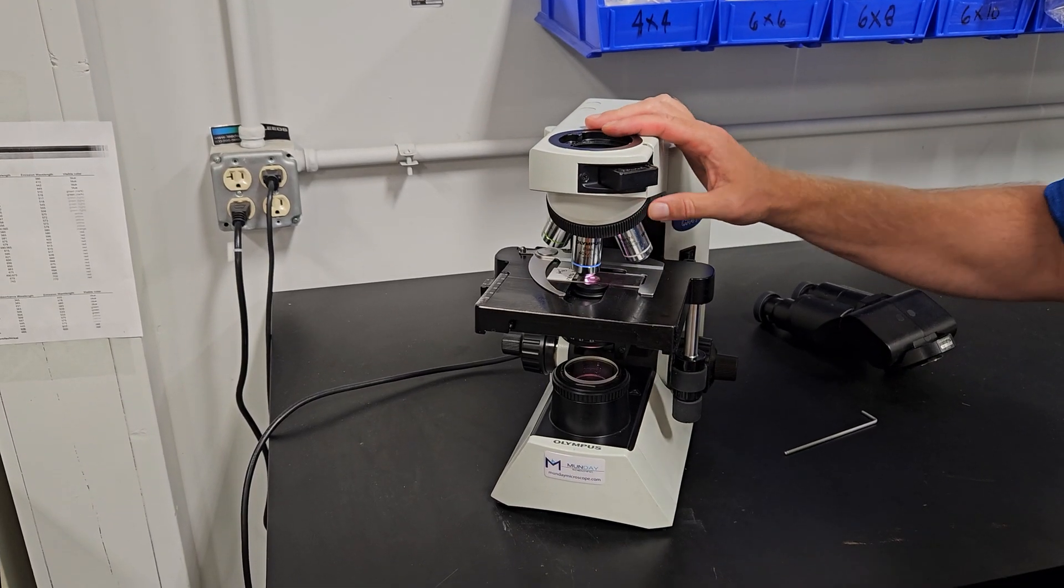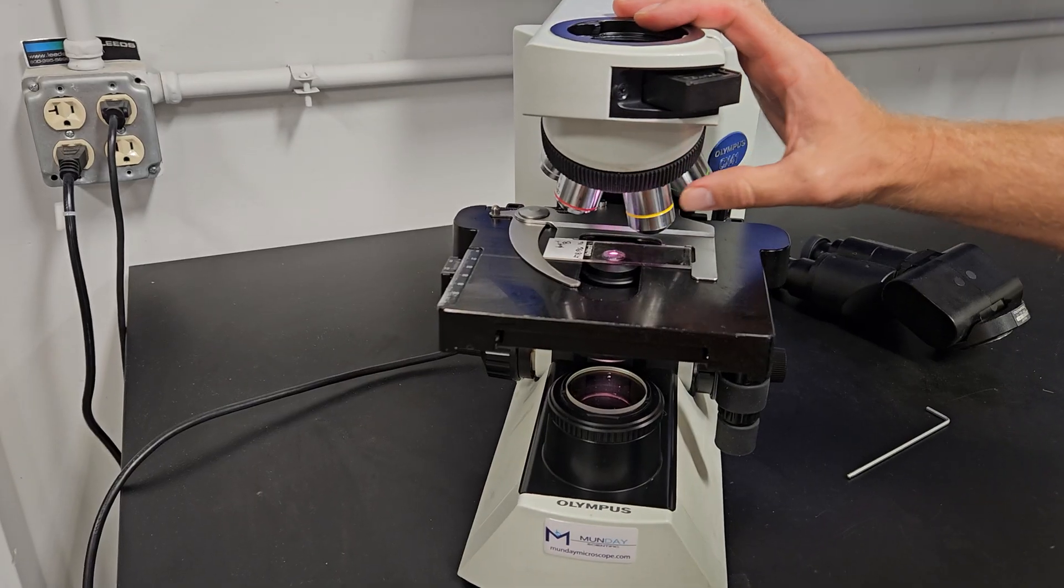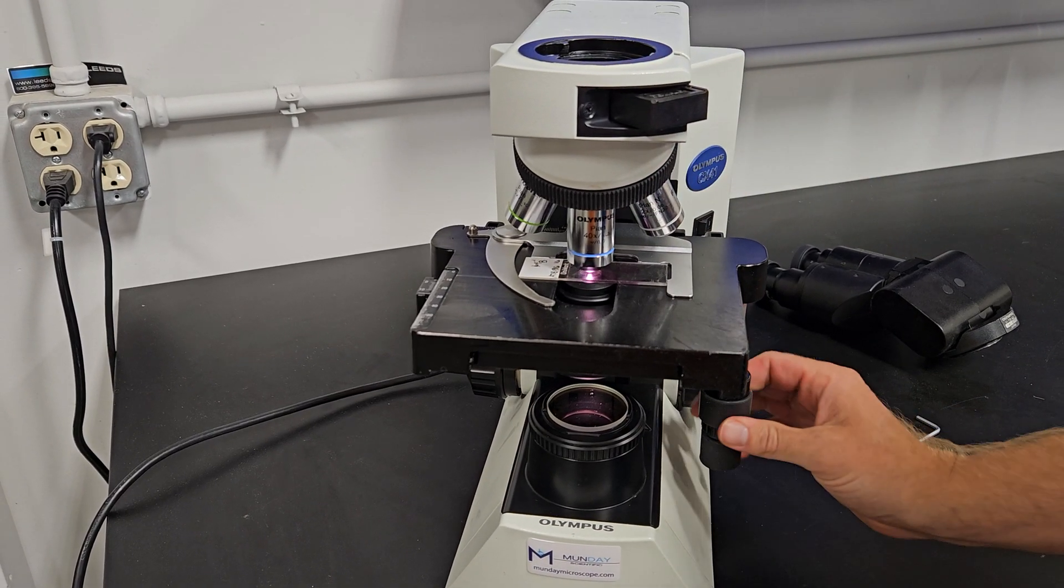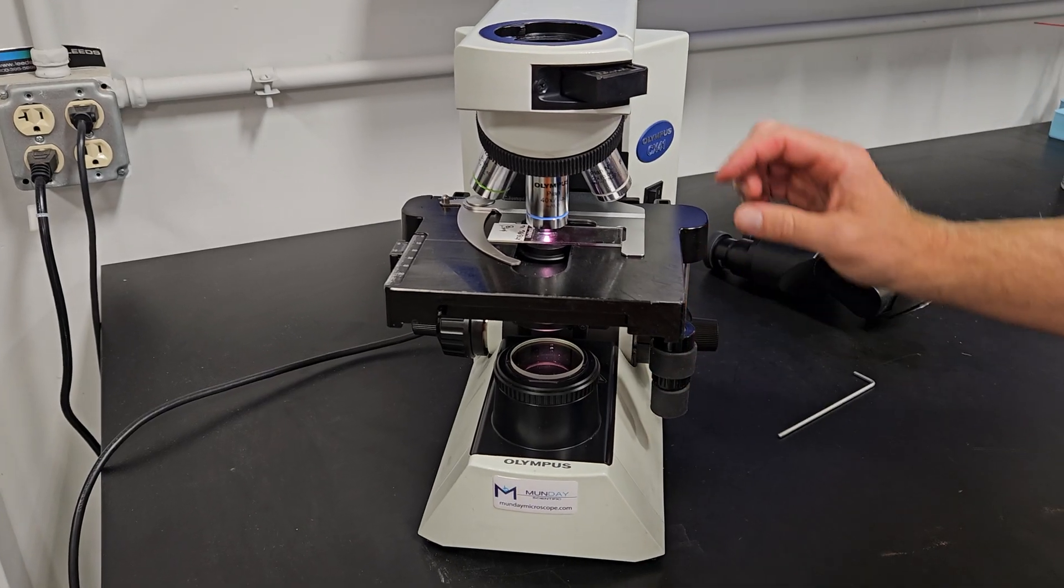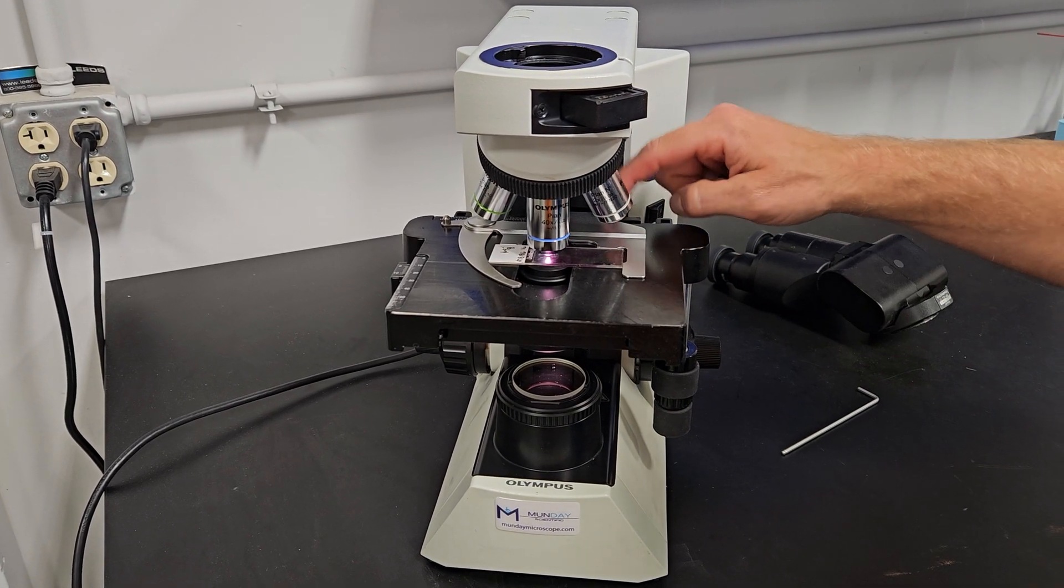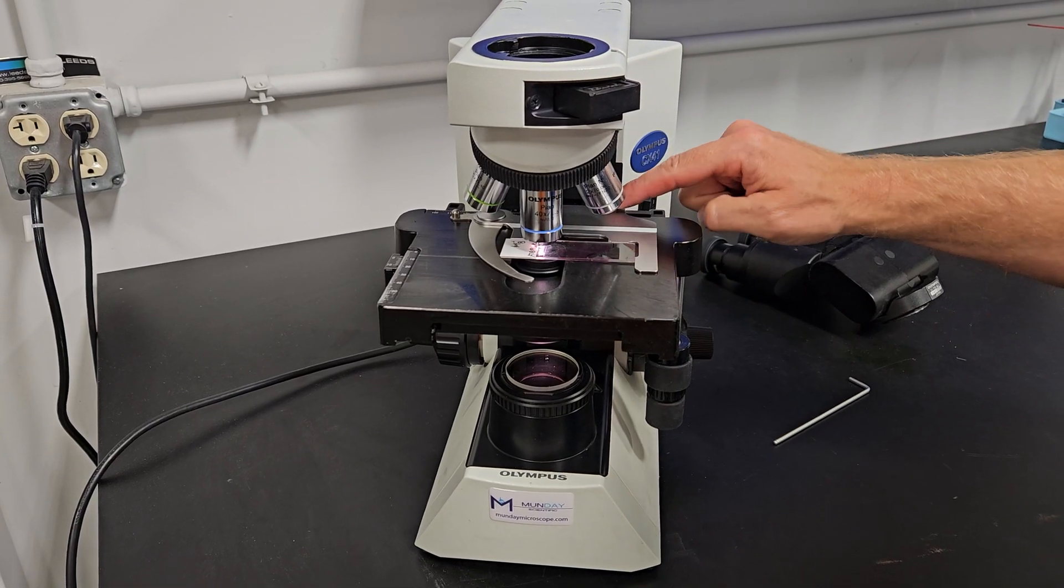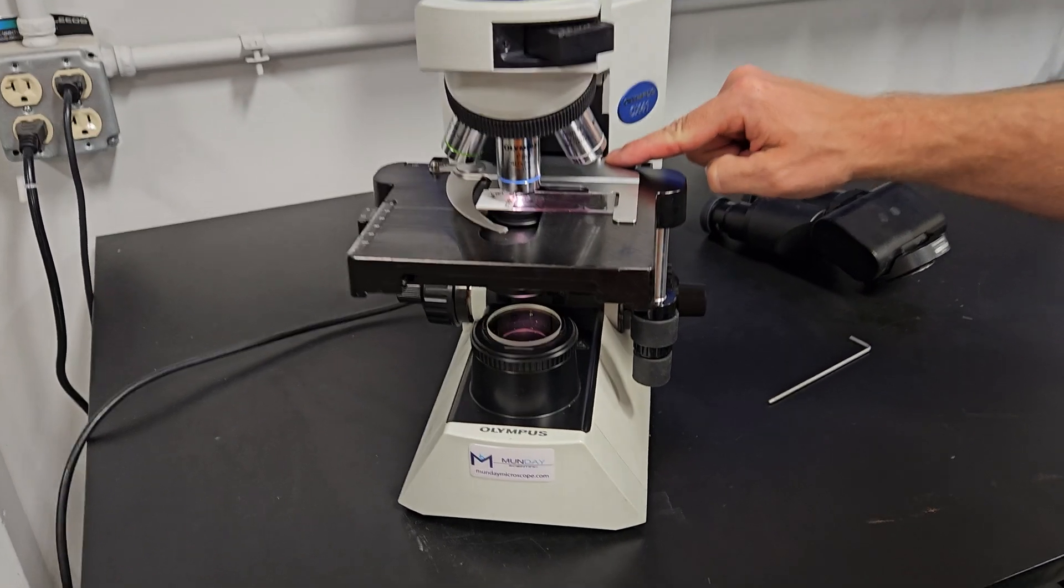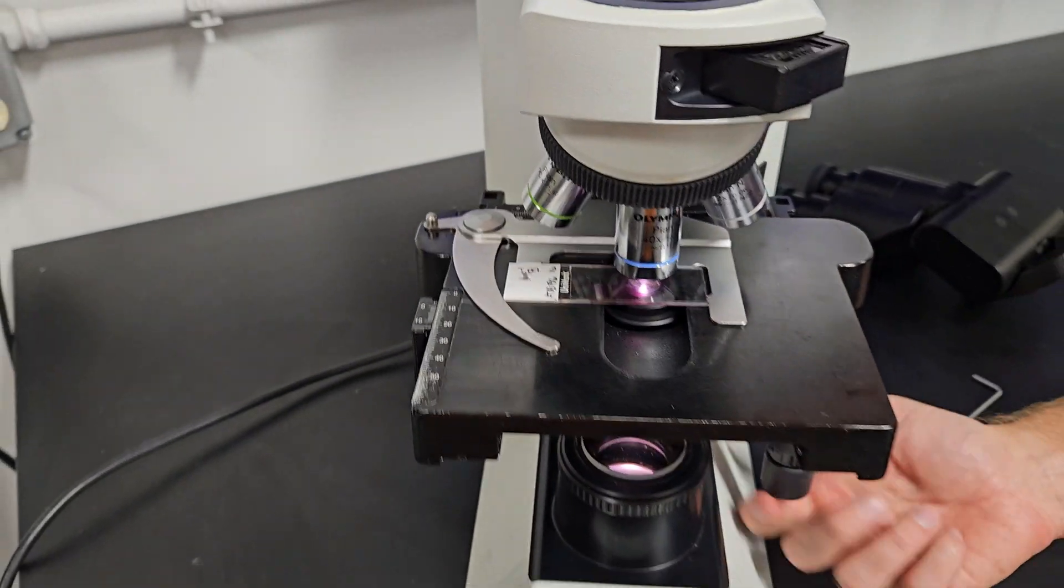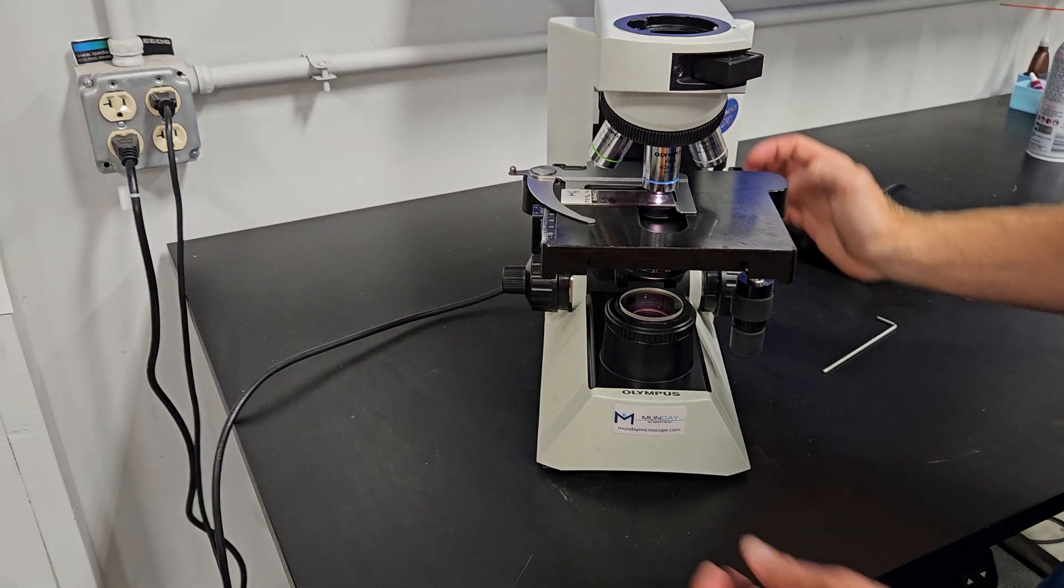You have a five place nose piece: 2x, 4x, 10x, 20x, and 40x. Right-handed stage. If you want to push the slide with your fingers, you can take the stage clip off and push it around. This is a 2.5 millimeter screw hole right here. You would just take this screw out and take this screw out and then the slide holder would come right off.